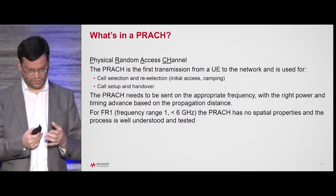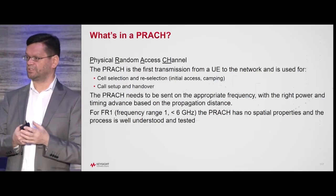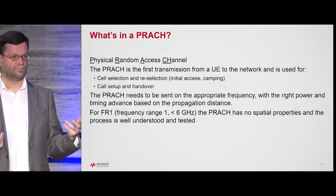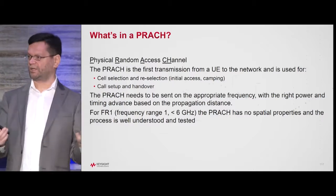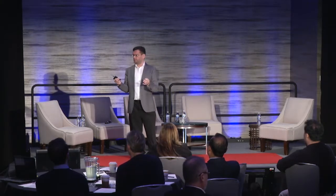For frequency range 1, which is the sub-6 GHz band, PRACH has no spatial properties to speak of because essentially we're talking about an omnidirectional system. Low-frequency mobiles in FR1 have very little directionality and almost no beam steering — maybe a bit of switching, but no beam steering. So the PRACH requirements for frequency range 1 are very simple: they're all based on power, timing, and frequency, and all the requirements are measured using cables.